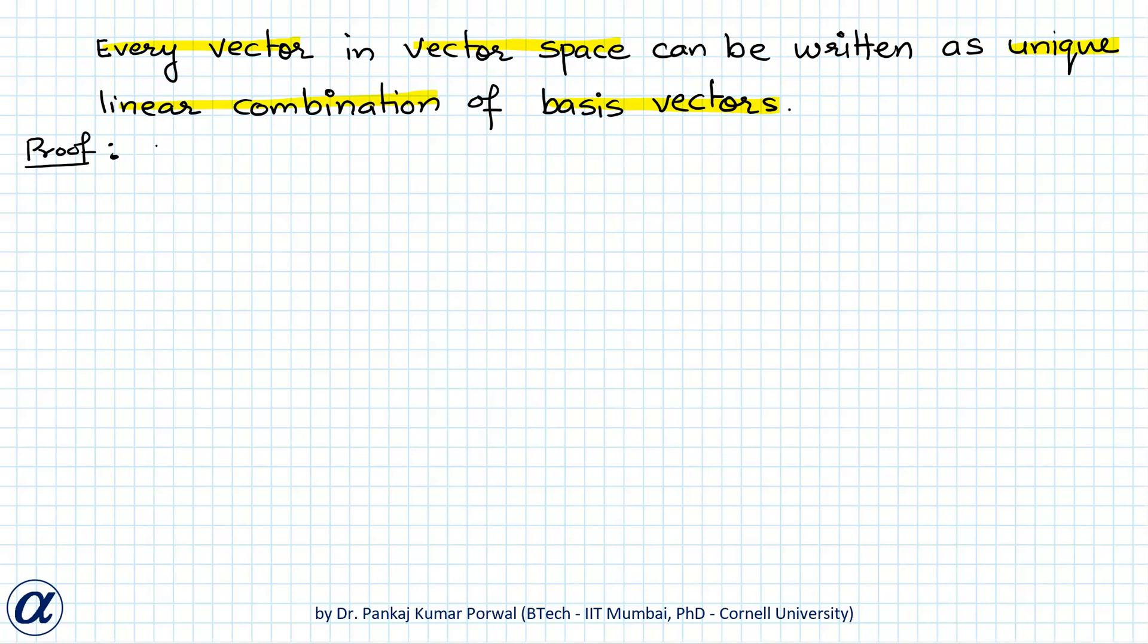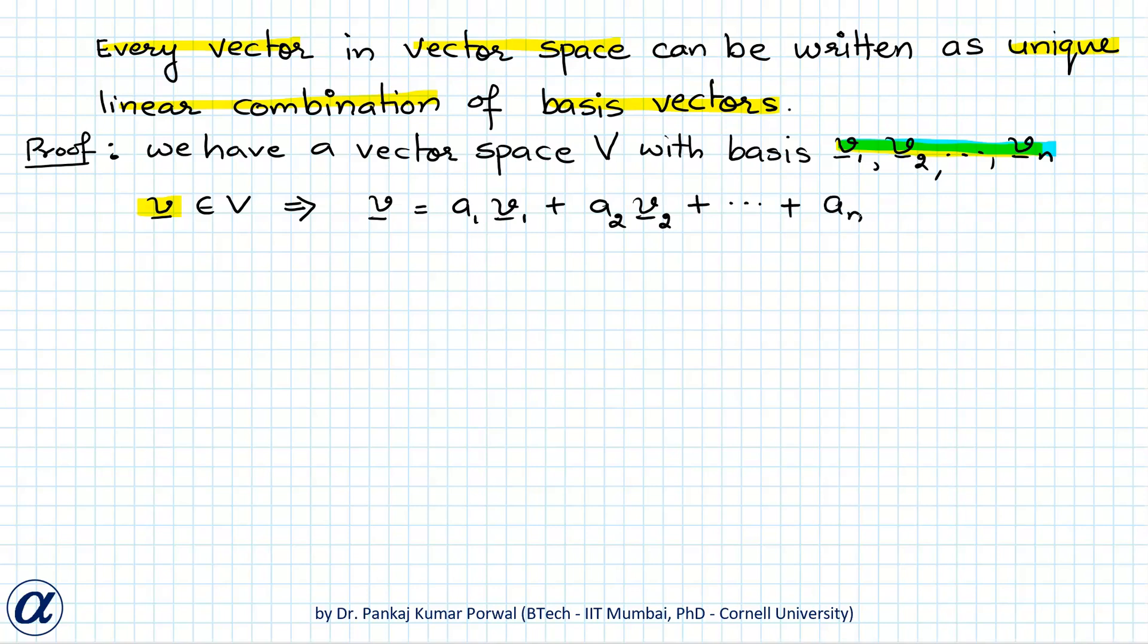Let's say we have a vector space capital V with basis V1, V2, dot dot dot, Vn. So there are n vectors in our basis and let's say there is another vector v in our vector space. Then we can write this vector v as a linear combination of our basis. So the linear combination is A1 V1 plus A2 V2 plus dot dot dot plus An Vn. And these scalars A1, A2 up to An are real numbers.